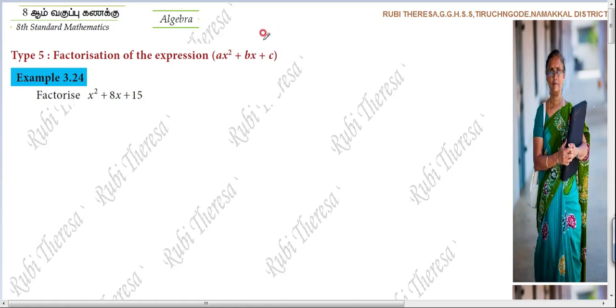But the previous Type 4, you are using identity, you factorized. Isn't it? Factorized using identities. It is not possible. Why is it a square number? Will you be able to square it? So you are using the expression form. Factorization of the expression.